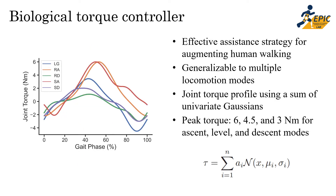To provide assistance using this exoskeleton we use a biological torque controller, which has shown strong results in augmenting human walking and can easily generalize across different ambulation modes. We do this by concatenating different univariate Gaussians that can be tuned to a different profile shape using parameters of targeted joint torques and input gait phase. We set the peak joint torque to three different Newton-meter magnitudes for ascent, level ground, and descent modes to reflect assistance relevant to the user's biological joint demand.